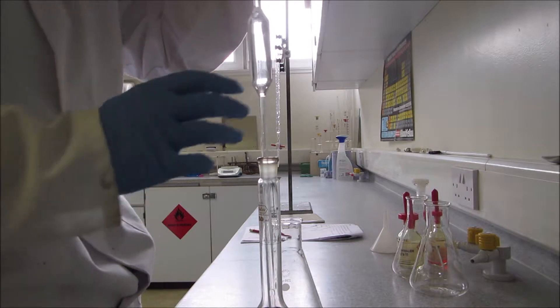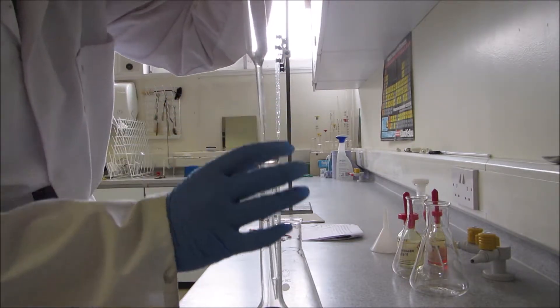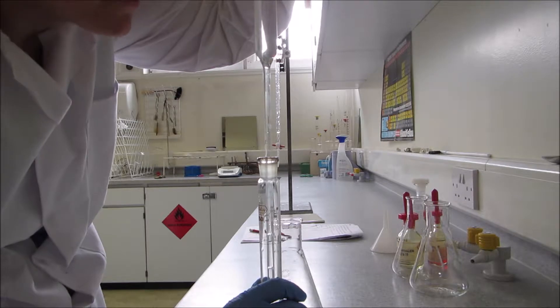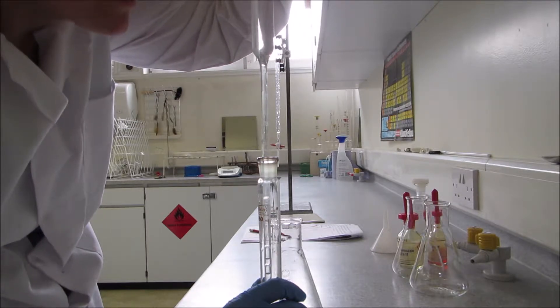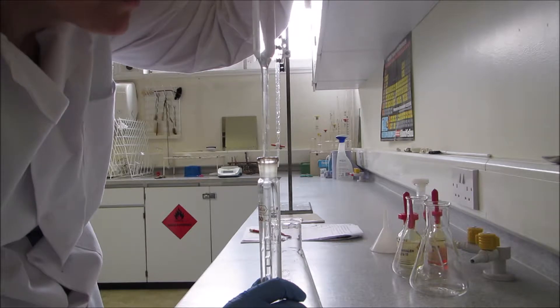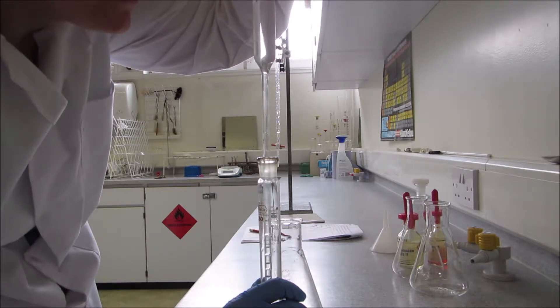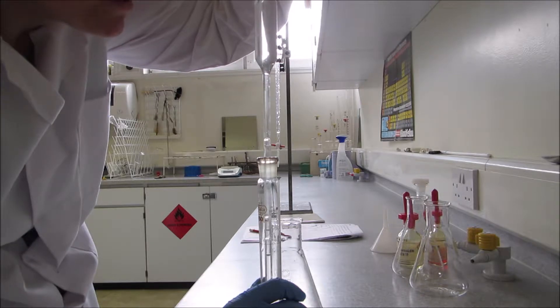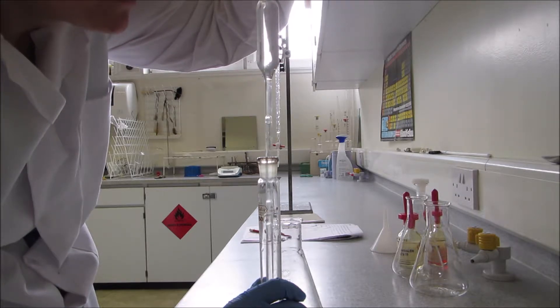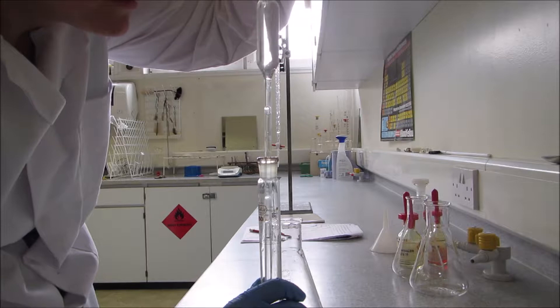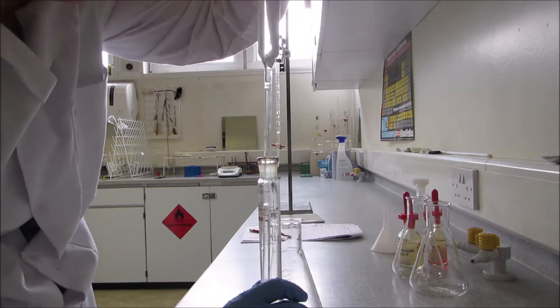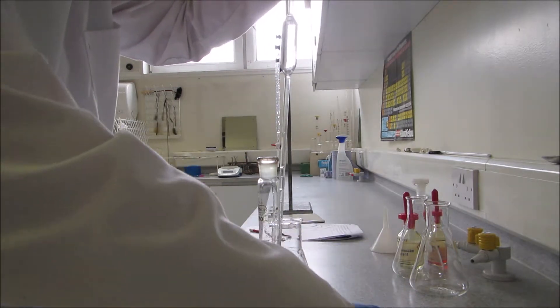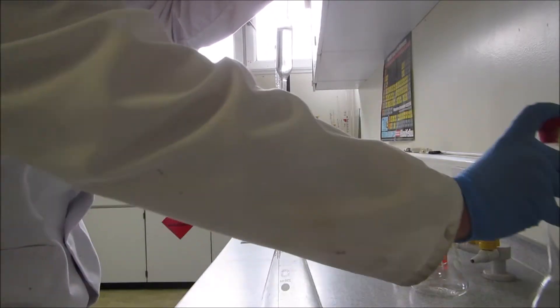So we're looking for the line on a volumetric flask, and you want to get the meniscus, that U-shaped bubble, get the bottom of it level with the top of your line. Is that too much? Just expel a little bit. Well, that's 25 milliliters. I'll just put it into the conical flask.